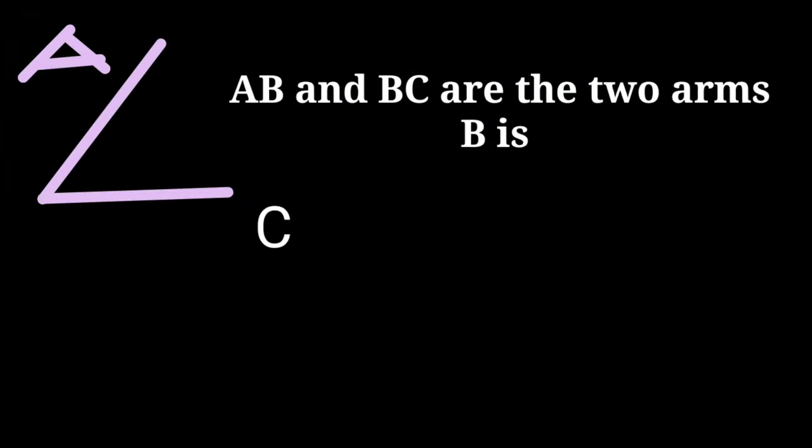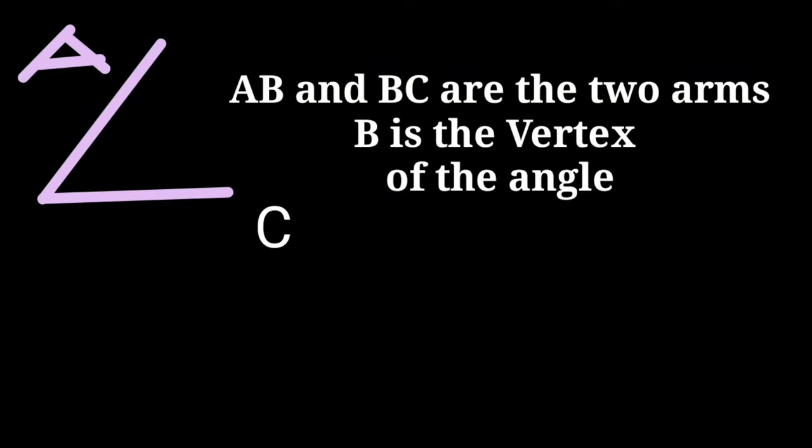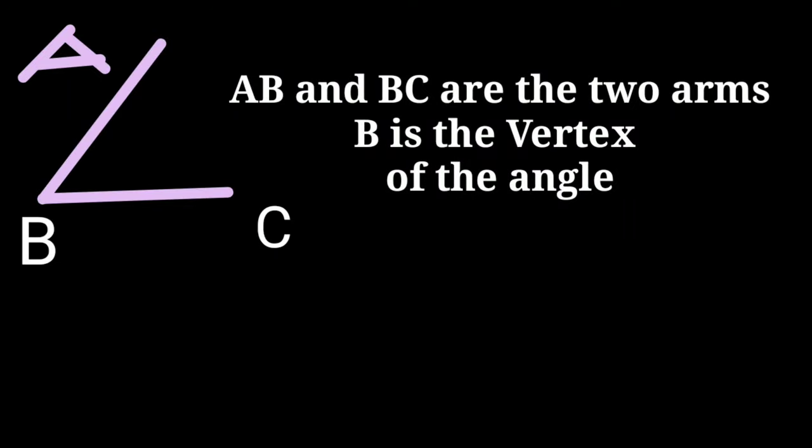There are two arms in an angle. Here AB and BC are the two arms, and B is the vertex of the angle. Also, the vertex should come in the middle when we are giving the name to the angle. So angle ABC or angle CBA, both are correct.